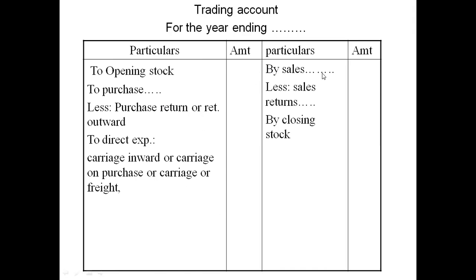The third thing is sales. We have to sell goods, and without selling there is no meaning of doing business. When we are doing sales, there are many possible reasons for returns — there may be defective goods not according to the customer's requirement. So in the same way, we return these from sales, and we write the net amount in the amount column.